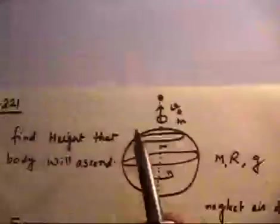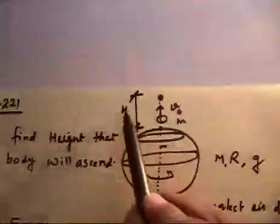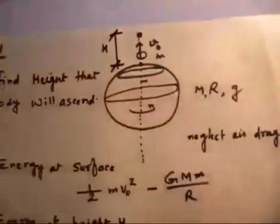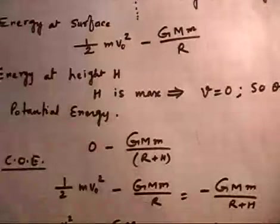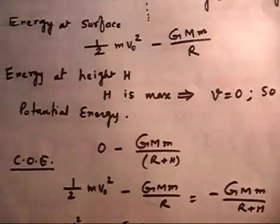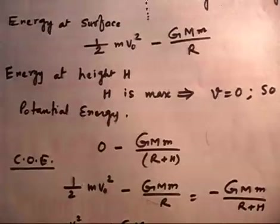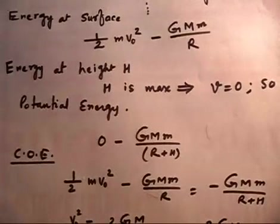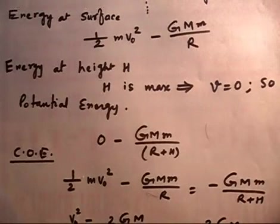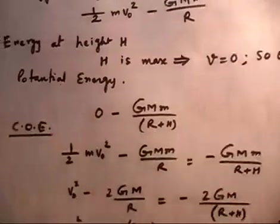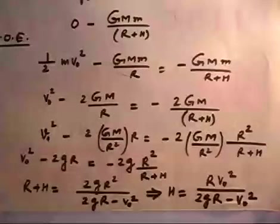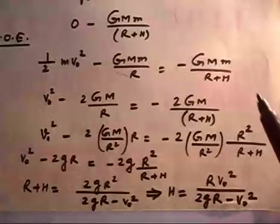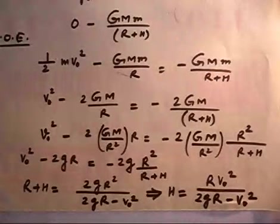The total distance from Earth's center at height H is R + H. So the potential energy at that point is -GMm/(R + H). Applying energy conservation: (1/2)mv0² - GMm/R = -GMm/(R + H). Solving this equation for H gives the maximum height. Try solving it yourself — you will get the answer.